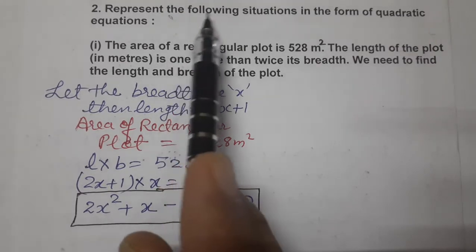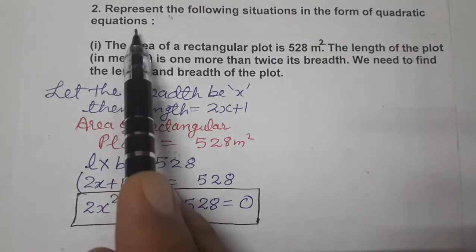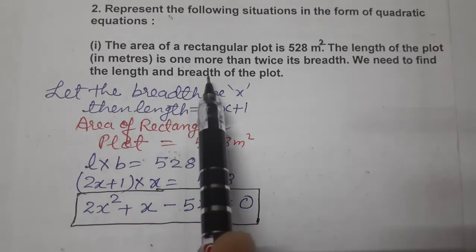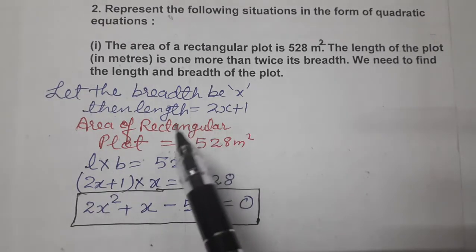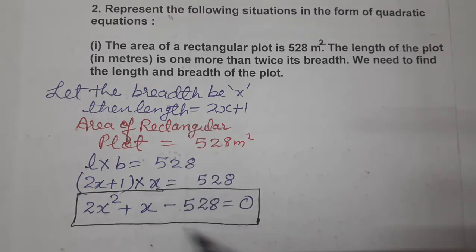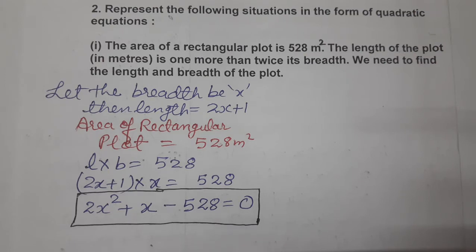The question was: represent the following situation in the form of a quadratic equation, and we also need to find length and breadth of the plot. So representation in quadratic equation is completed. Now we need to solve also, and we will solve according to the Class 9 method — middle term split, that is factorization method.